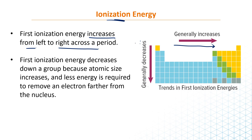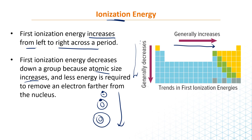Why does it decrease going down a group? Because the atomic size increases. When you go down, the electron is in the first energy level, then the second, then the third, so it becomes farther away from the nucleus. The farther the electron from the nucleus, the weaker the attraction, so it's easier to remove. We don't need a lot of energy — that's why when you go down, the ionization energy decreases.